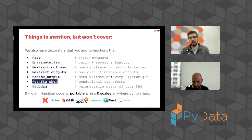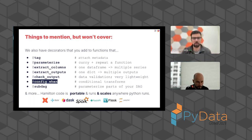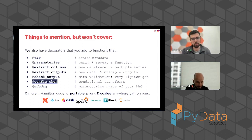There's a lot more to the framework. We have decorators that form higher-level operations on top of functions — you can attach metadata, repeat them with different parameters, do data validation. The one useful for the rest of this talk is config.when: you can do conditional transforms, having one function included in the DAG in one case and another in a different case, swapping between them. Hamilton is a new way of writing Python functions but isn't opinionated about tools you use to scale, with natural integrations for Spark, Ray, Dask, FastAPI, Flask, and Jupyter Notebooks.